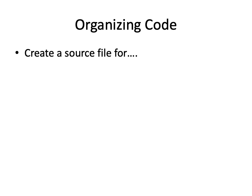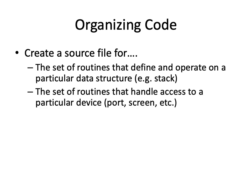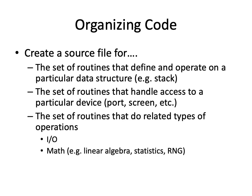When organizing code, create a source file for the set of routines that define and operate on a particular data structure — like a stack or queue. Create a .c file and an accompanying .h header file for that. You can also group routines that handle access to a particular device, related operations like input/output, math, linear algebra, statistics, or a random number generator. Also have a separate .c file for your driver — your main method — that calls code in all the other source files.